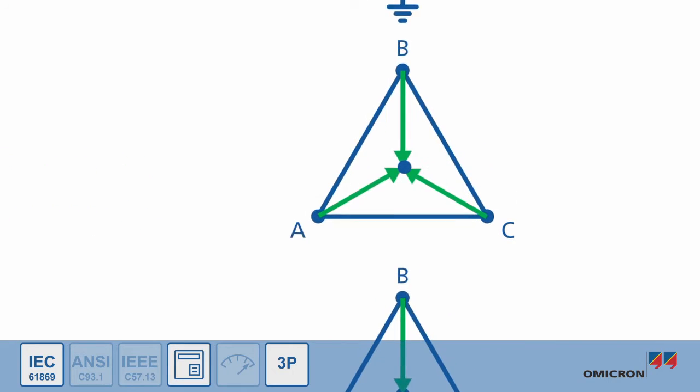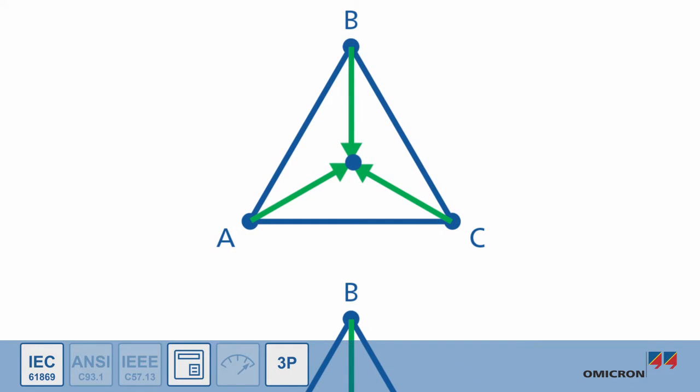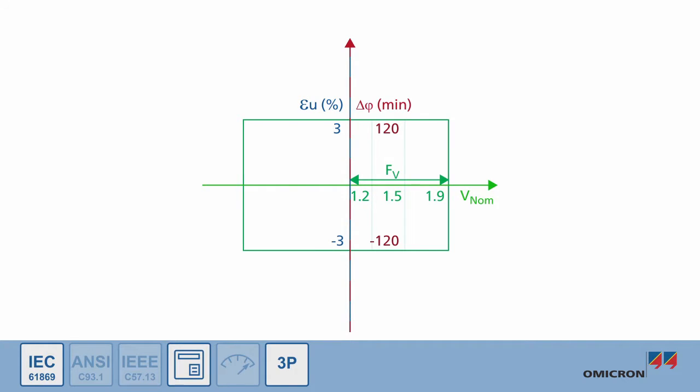In ungrounded systems, a line to ground fault on any phase will change the potential of the star point, resulting in overvoltages in the other two phases. The lower limit of the operating range is 5% of the nominal voltage.